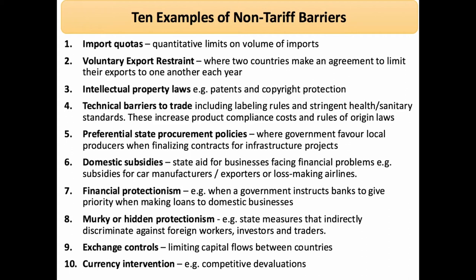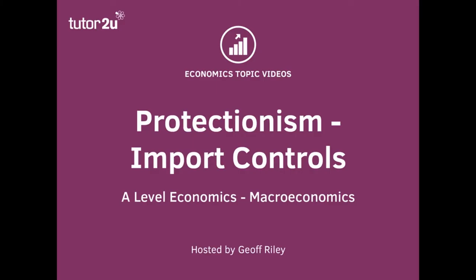Non-tariff barriers often invite retaliation — for example, a recent trade spat between Canada and the United States over meat labeling regulations — a good example of a technical barrier. One favorite example is Costa Rica banning old vehicles. So those are 10 examples of non-tariff barriers — a particular and increasingly significant form of protectionism in the world economy.